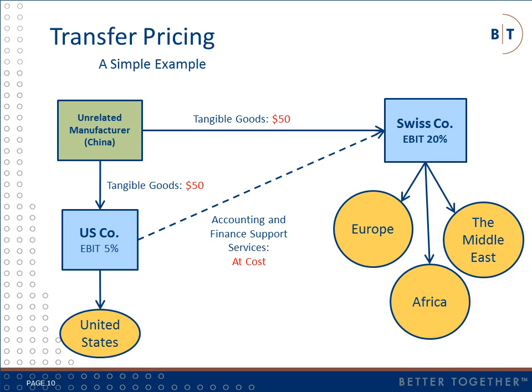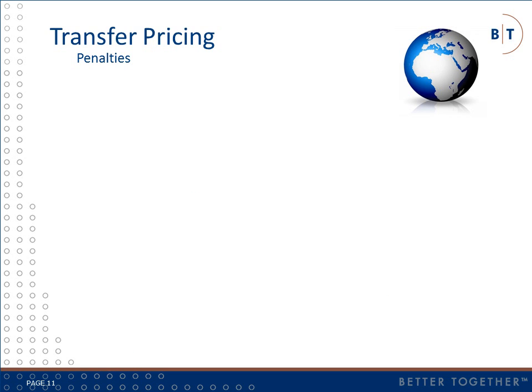Does this pricing arrangement satisfy the arm's length standard from a U.S. perspective? Before we answer that question, let's briefly discuss the transfer pricing penalties that can be enforced by the IRS in cases where an adjustment is made and the taxpayer does not have adequate supporting documentation in place at the time the tax return is filed.